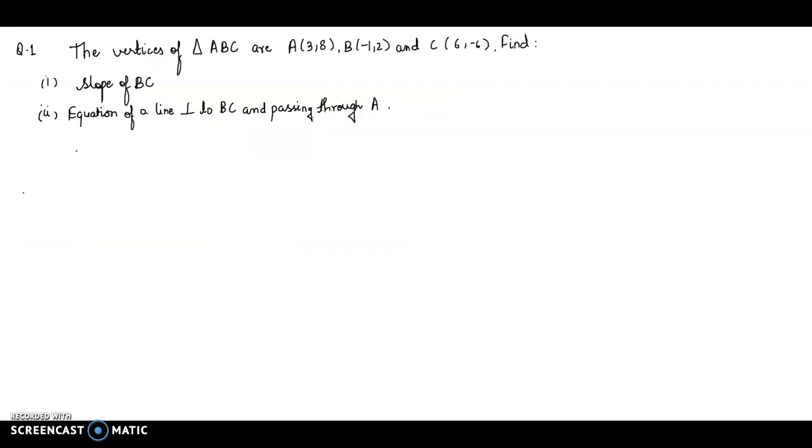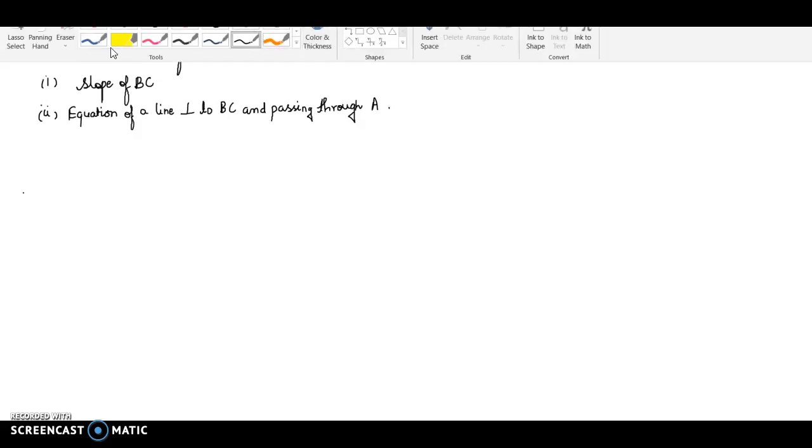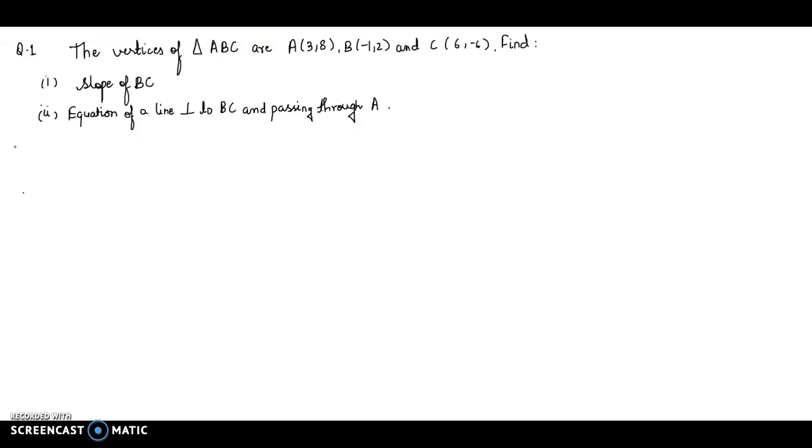The vertices of triangle ABC are given here, and we have to find out the slope. First part is find slope of BC. Let's see how we will do it. Solution: slope of BC.